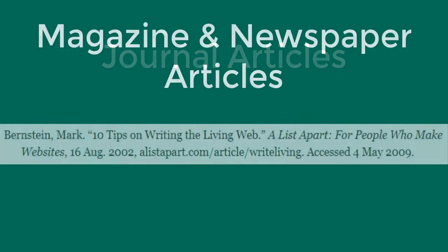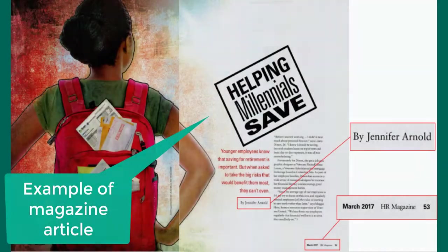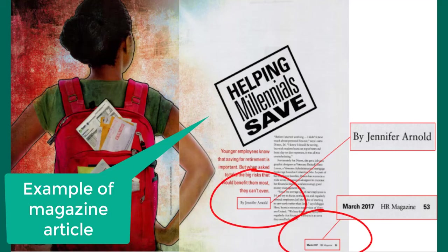Magazine and newspaper articles follow a similar format. They won't have a DOI listed, so you may include the URL instead of a DOI and the date that you accessed the article. Like journal articles, citation information for magazine and newspaper articles might be found at the top or at the bottom of the page.